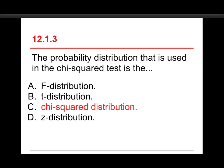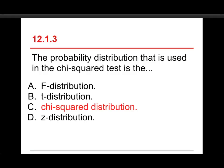The answer is the chi-squared distribution. The F-distribution is used for the analysis of variance. The t-distribution is used for the t-test. The z-distribution tends to be used for the z-test.